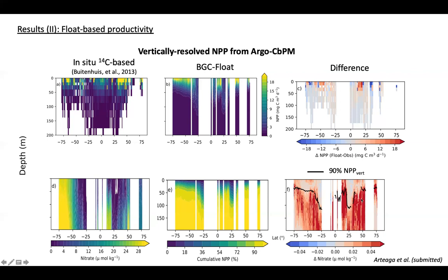This is actually a very interesting emergent result. The CBPM does not use any information on nutrients to parameterize phytoplankton division rates. So the fact that the gradient in nitrate concentration as observed by the floats agrees well with changes in the bottom layer of vertically integrated primary production suggests that using the chlorophyll-to-carbon ratio to parameterize phytoplankton division rates is giving us a coherent picture of primary productivity in the global ocean.